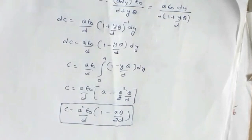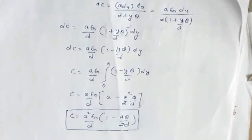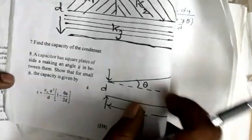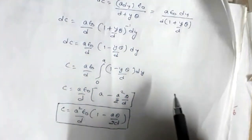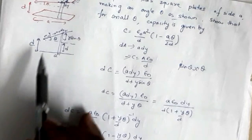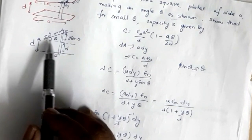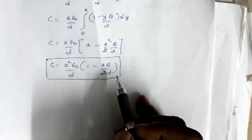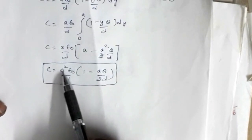This is the result we had to prove, as given in the question: C = ε₀a²/d · (1 - aθ/2d). Now, as a check, if the inclination changes to 0 — meaning both plates are parallel — then theta equals 0. When theta = 0, the correction term vanishes and we get C = a²·ε₀/d. Since the plate is square, its area is a², which is exactly the standard parallel plate capacitor formula C = Aε₀/d. This confirms our result.